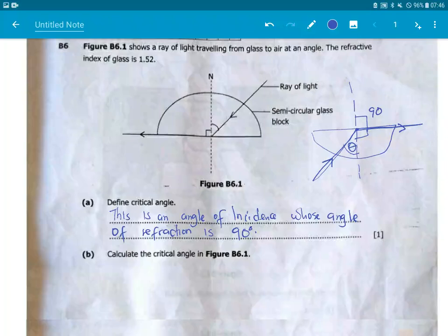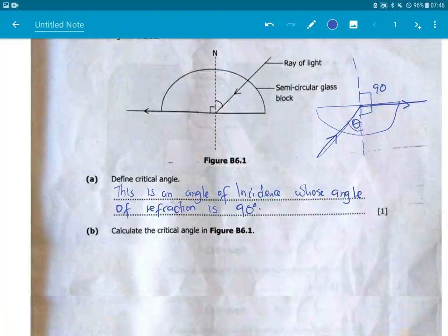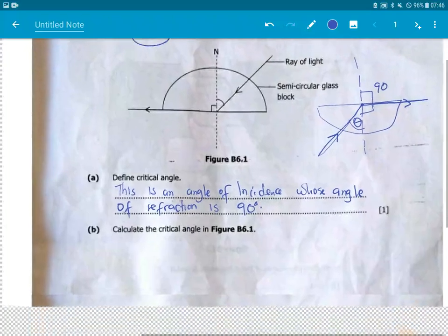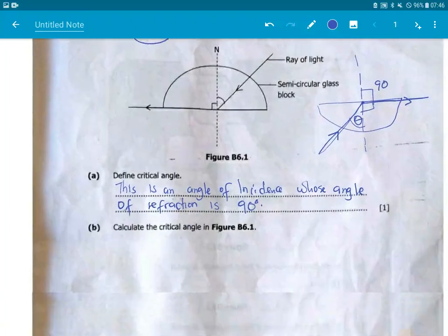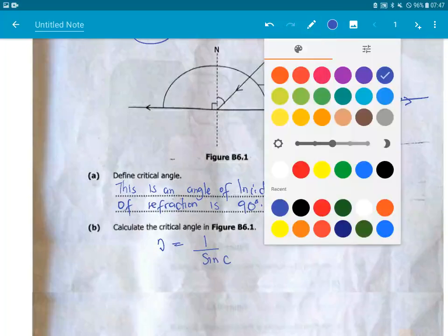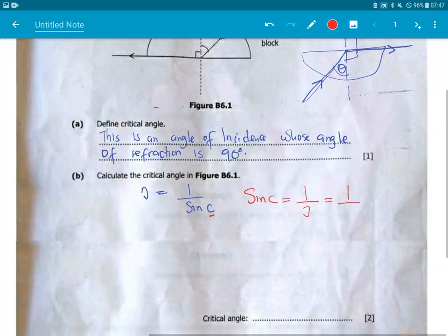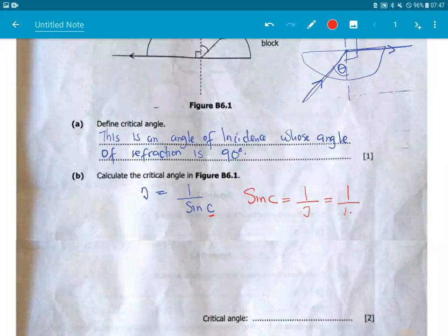Number two, calculate the critical angle. Now, what is the relationship between the critical angle and the refractive index? Here's what we need to know. Refractive index is given by 1 over sine C, where C is a critical angle. So we are saying sine C is equal to 1 over the critical angle. Critical angle has been given to be 1.52. Get the calculator.